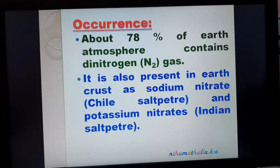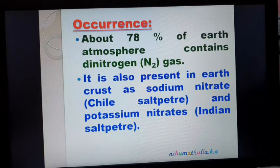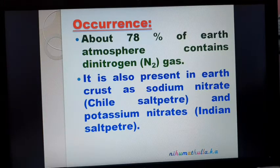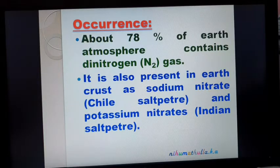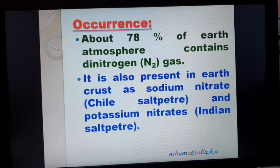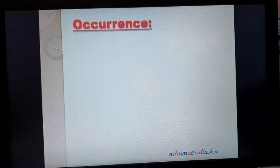The molecular nitrogen N2 is called dinitrogen, O2 is dioxygen, H2 is dihydrogen. Nitrogen is also present in the earth's crust as sodium nitrate (NaNO3), called Chile saltpeter, and potassium nitrate, called Indian saltpeter. So these are the occurrences of nitrogen: atmospheric 78% nitrogen, and in the earth's crust as sodium nitrate and potassium nitrate.